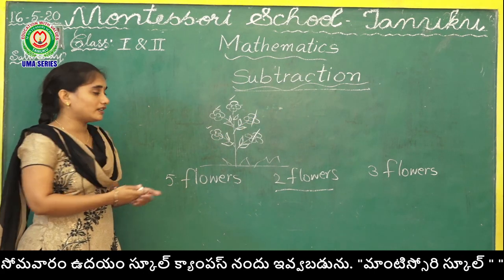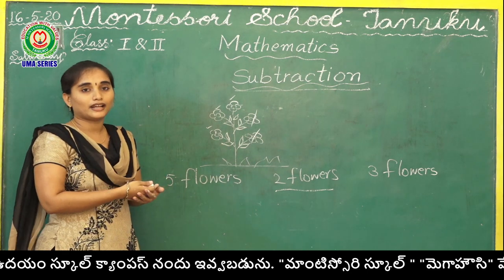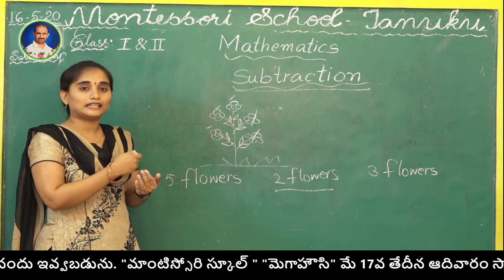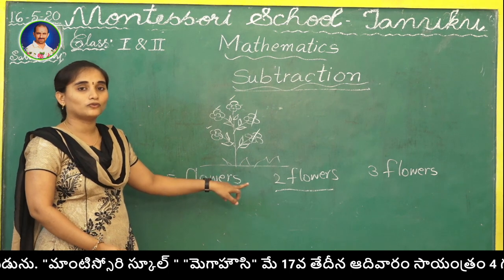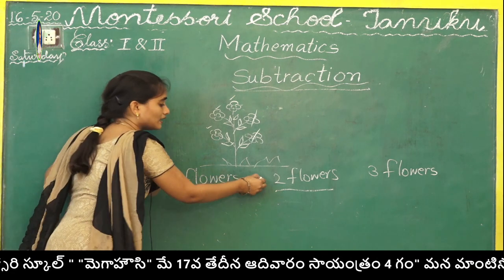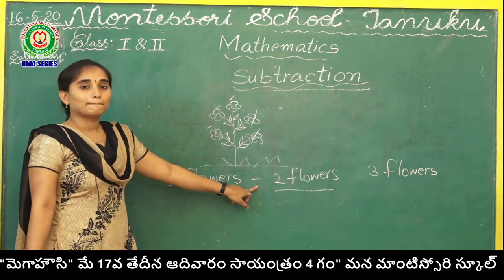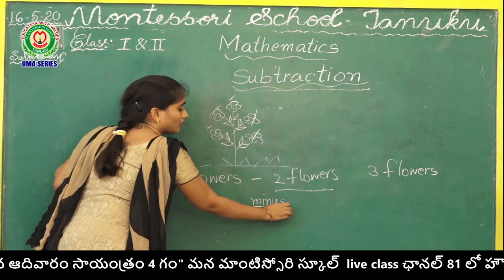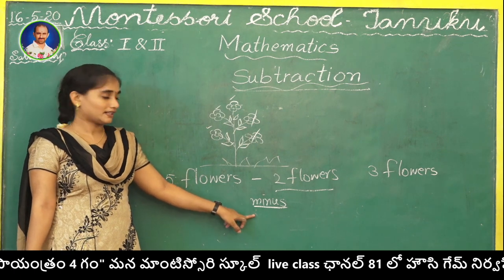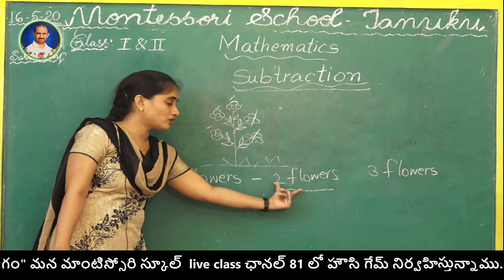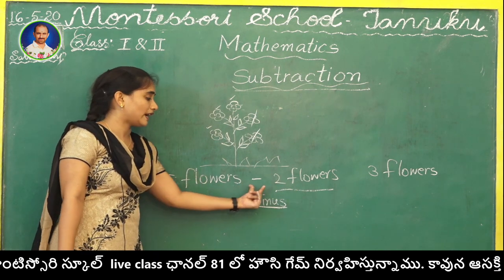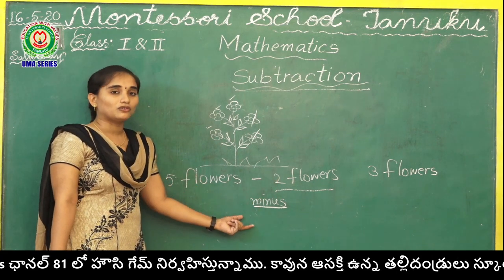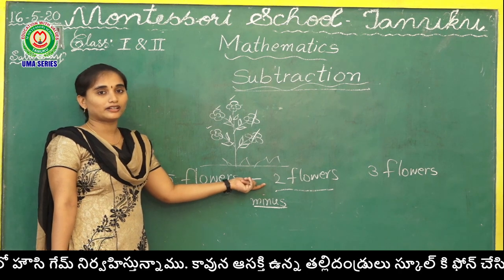So I am saying subtraction. We need a symbol — just as in addition, we have to know one symbol for subtraction also. What will be the symbol? Minus. I think you all know about this symbol. What is the symbol? Minus. From 5 flowers, Rani took 2 flowers, so we have subtracted. Taken away means we have to do subtraction. For subtraction, what is the symbol? Minus.